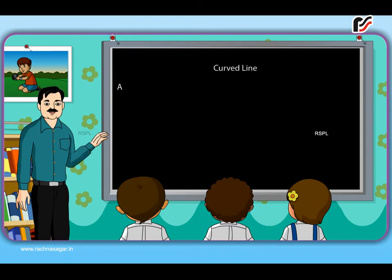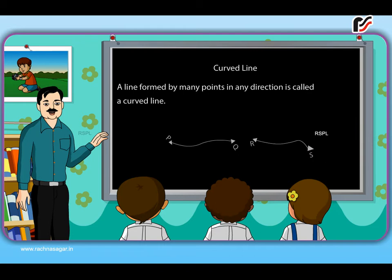Curved line. A line formed by many points in any direction is called a curved line. Here, line PQ and RS are curved lines.